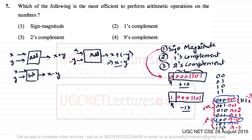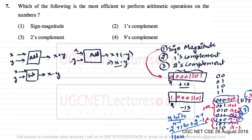With 3 bits we only represent 7 combinations instead of 8. In general, with n bits using sign-magnitude, the minimum number is minus 2 raised to power (n minus 1) plus 1, and the maximum number is plus 2 raised to power (n minus 1) minus 1. So we are representing one fewer combination — we are wasting one combination.